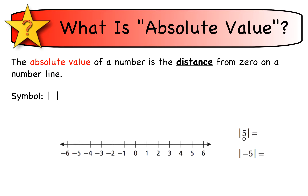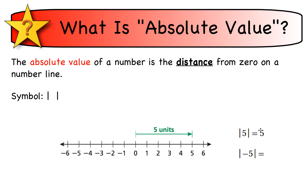If I have the absolute value of five, how far is positive five from zero? It's five units away, so the absolute value of five is five. What about negative five? How far is negative five from zero? It's the same distance — also five units. You can't have a negative distance, so absolute value is always positive.